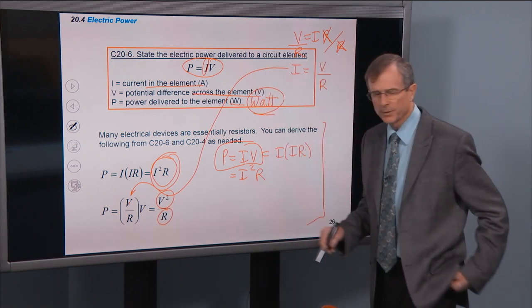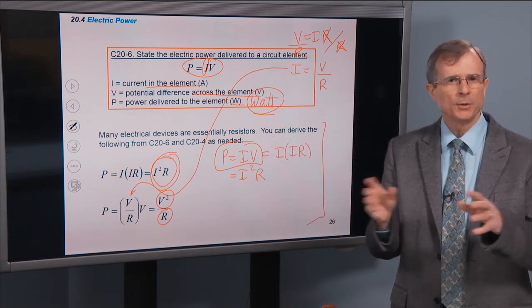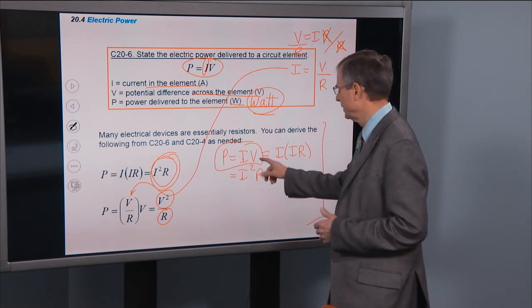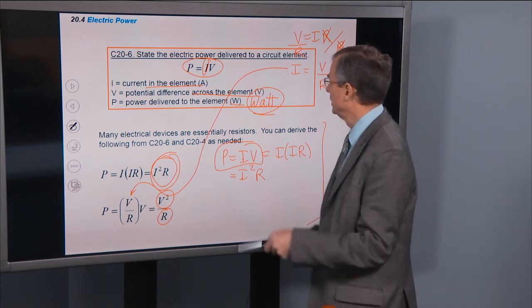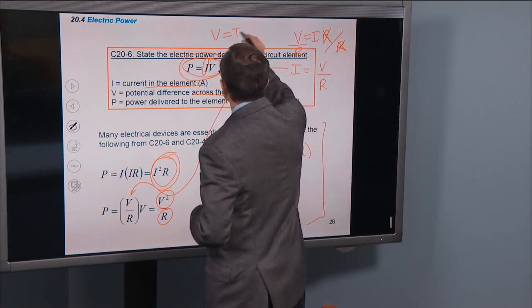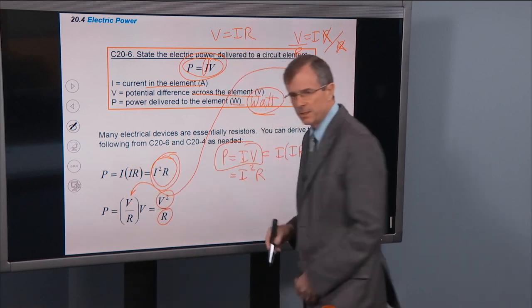So we'll use both of these at different times, but that's how you relate. If you can't remember these, all the better. You can always derive it. All you need to know is P equals IV and V equals IR. And you can get any of these other relationships.